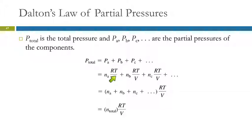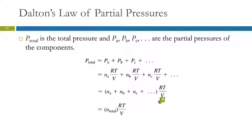All of these gases share the same container. R is always constant, the temperature is the same for all gases in the sample, and the volume is the same. So we can factor RT/V out of the expression, giving us the sum of the moles of each gas times RT/V. Therefore, the total pressure equals the total number of moles times RT/V.